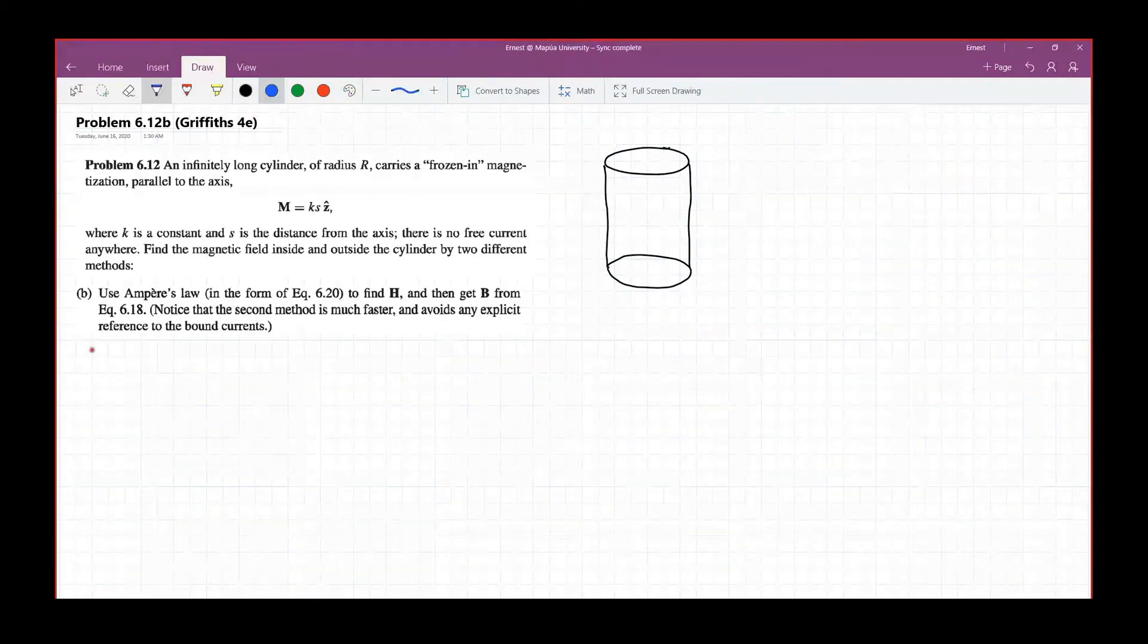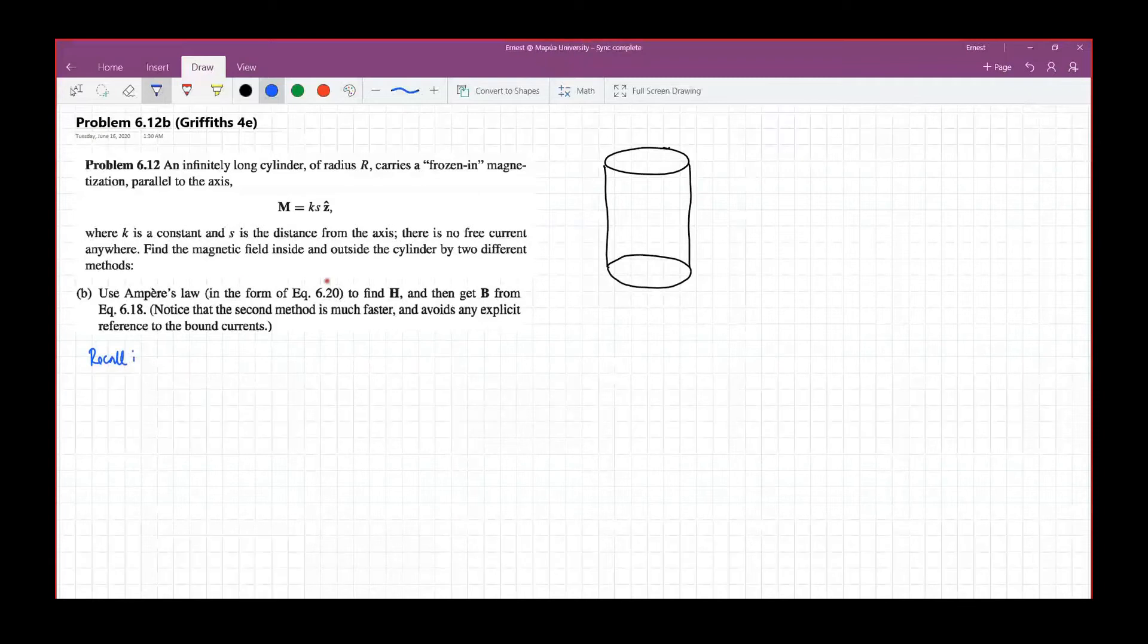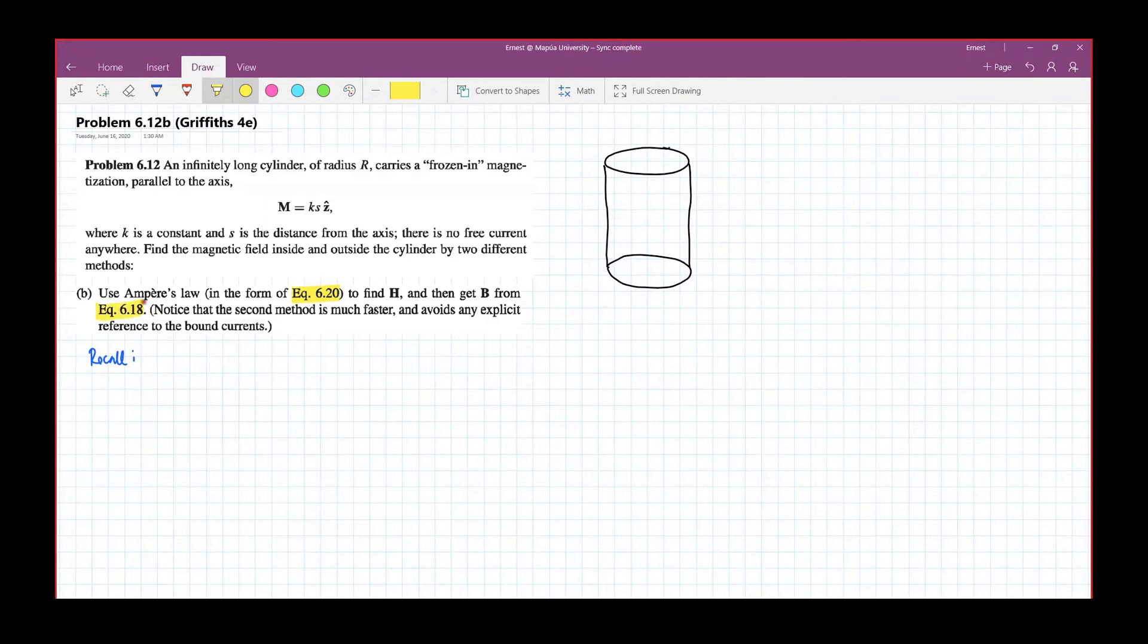Let's recall first the two equations. Equation 6.20 and equation 6.80. From your book, equation 6.20 is your Ampere's law for linear magnetic materials in terms of your auxiliary field H. So the closed integral of H dot dl equals I enclosed.